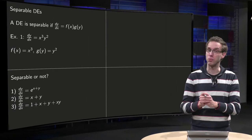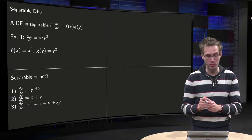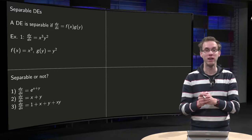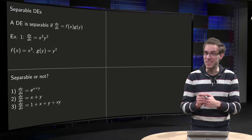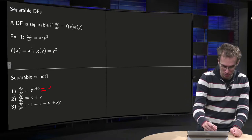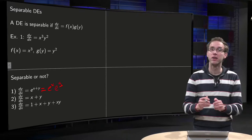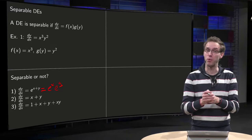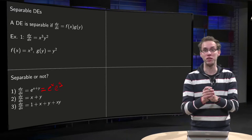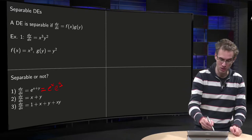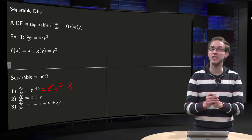Let's take a look at some examples — separable or not. First, we have dy/dx equals e to the power x plus y. It doesn't look that separable, but you can rewrite this as e to the power x times e to the power y. So this differential equation is separable because f(x) = e^x and g(y) = e^y.